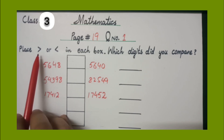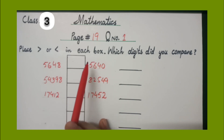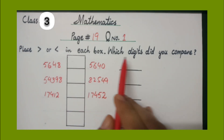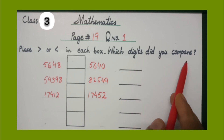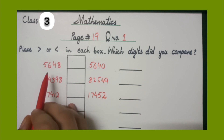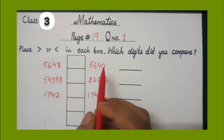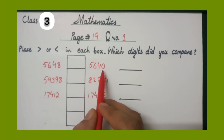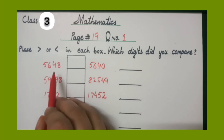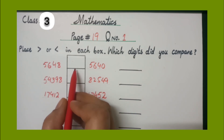The question says: place greater than or less than in each box, as you can see the boxes in your book. So here we have some questions from your book. Number 1: we have 5,648 and 5,640. As it is difficult to find which digit is greater or lesser, can you put the greater than or less than symbol here?